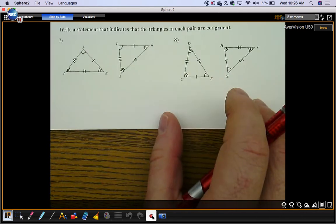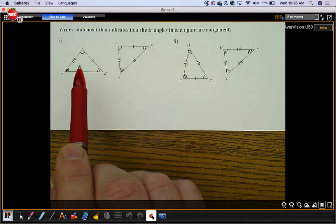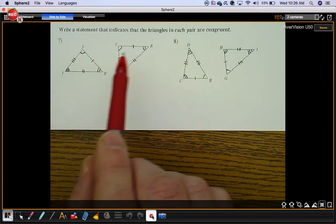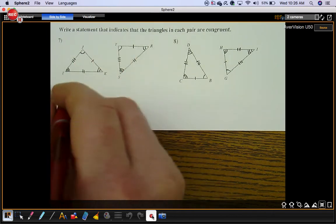On this next section, we're going to write a statement that indicates the triangles in each pair are congruent. So in these two triangles, they tell you six pairs of things. Name this triangle. That's all you need to do.